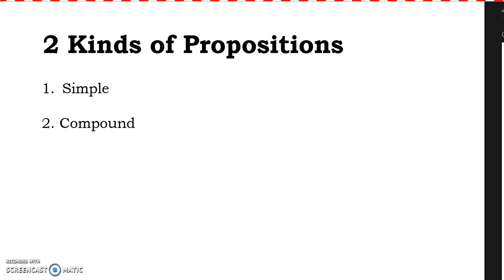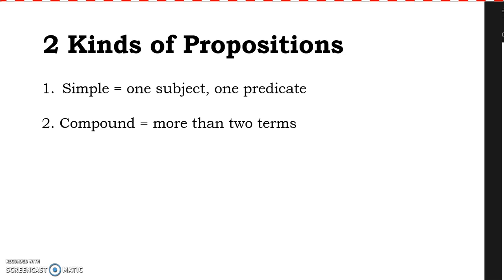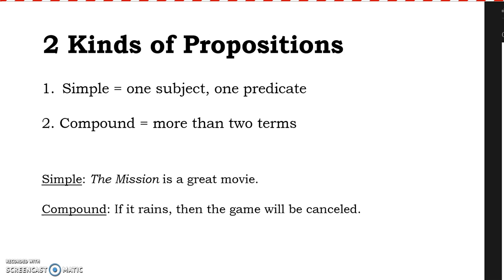There are two kinds of propositions: simple and compound. A simple proposition has one subject and one predicate. A compound proposition has more than two terms. Here's an example of a simple proposition: 'The Mission is a great movie.' Here's an example of a compound proposition: 'If it rains, then the game will be cancelled.'